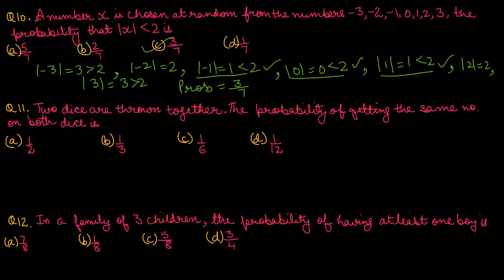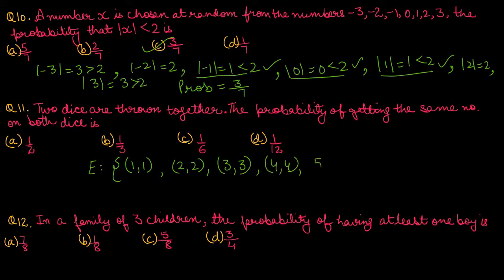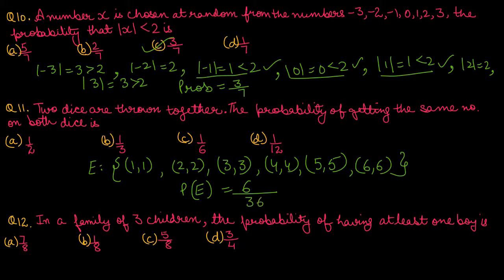Question number 11: Two dice are thrown together. The probability of getting the same number on both dice. The favorable cases — doublets — are: (1,1), (2,2), (3,3), (4,4), (5,5), (6,6). Number of favorable cases is 6, and total cases when two dice are thrown is 36. After cancellation, we get 1 upon 6. Option number C is correct.